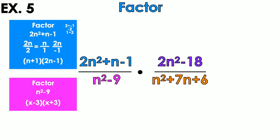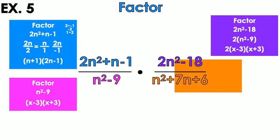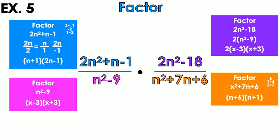For the purple part, 2n squared minus 18: the GCF is 2. Inside the parentheses is n squared minus 9, which is again the difference of two squares, giving 2 times the quantity n minus 3 times n plus 3. For the orange part, find factors of 6 that add to 7: 1 times 6 and 2 times 3 — the pair that adds to 7 is 1 and 6, so that factors to n plus 6 times n plus 1.